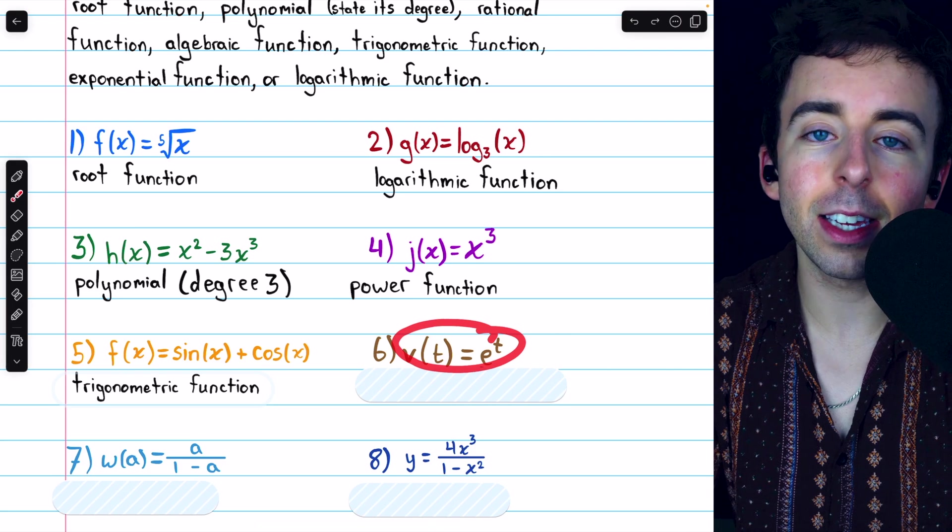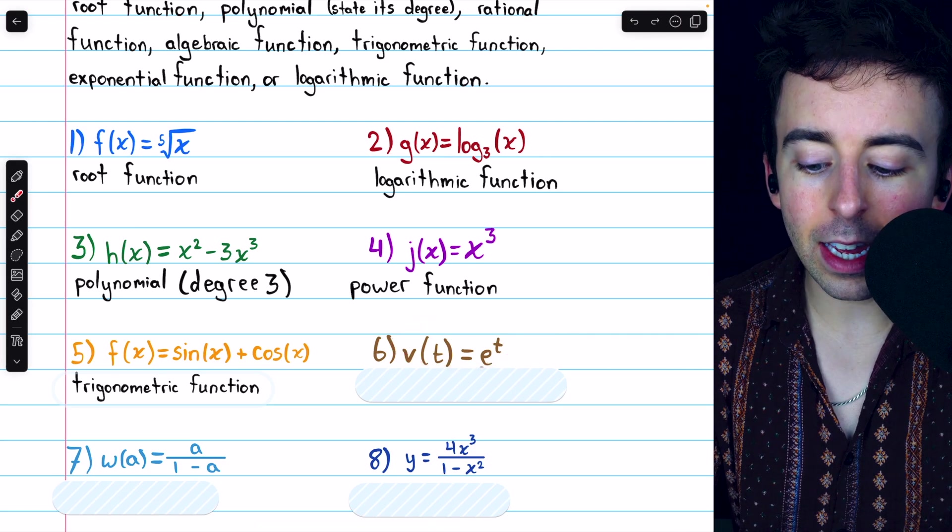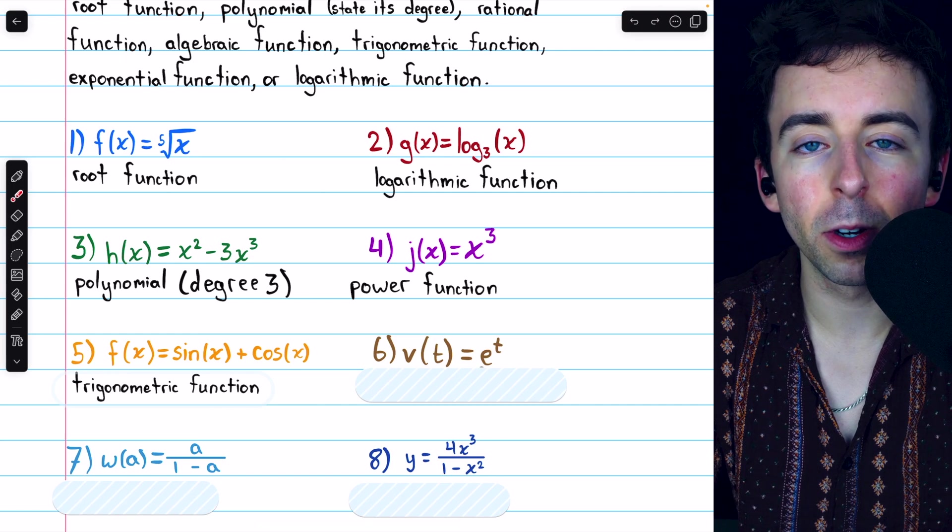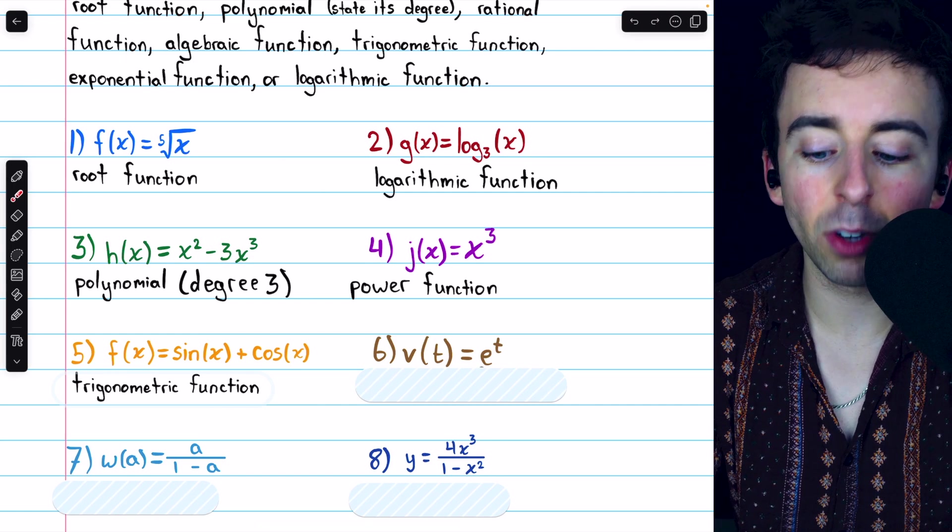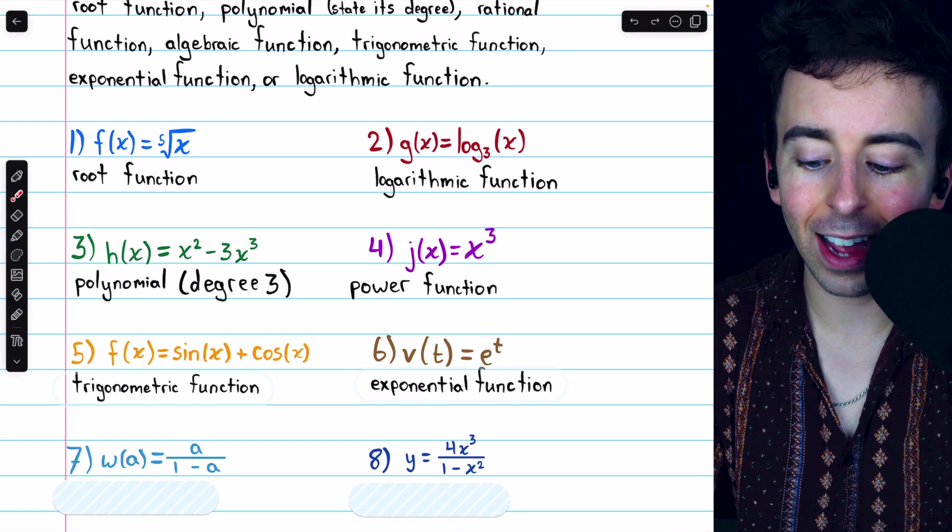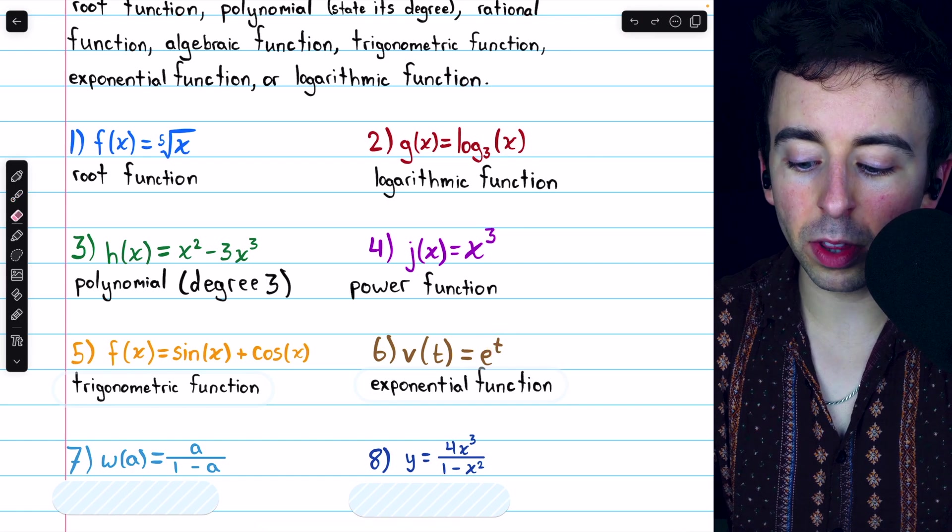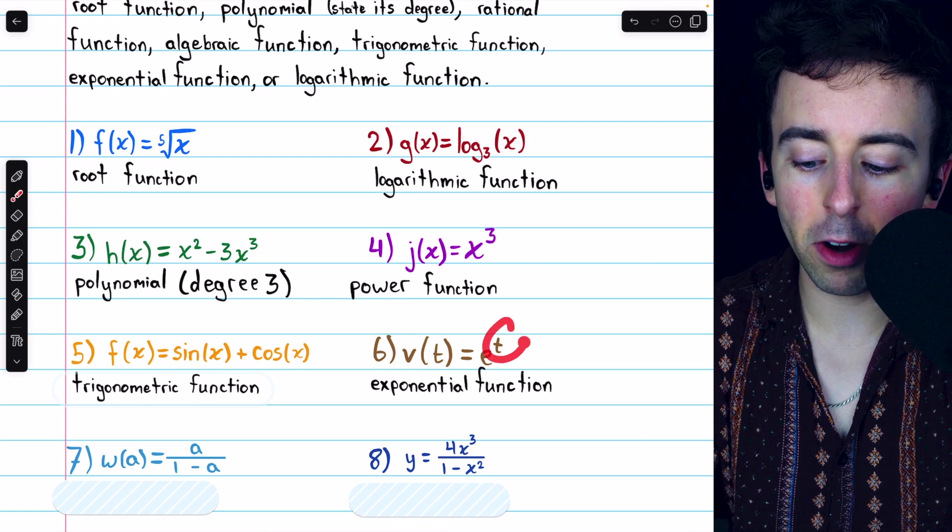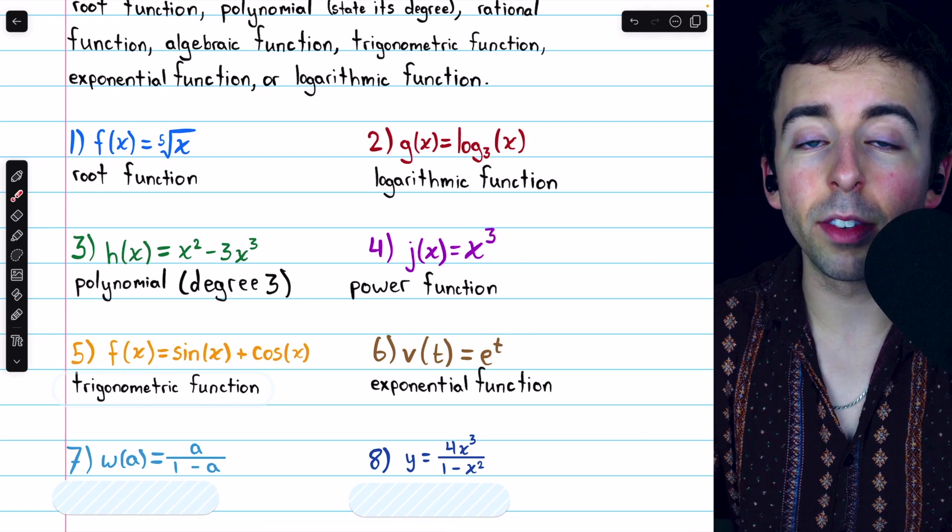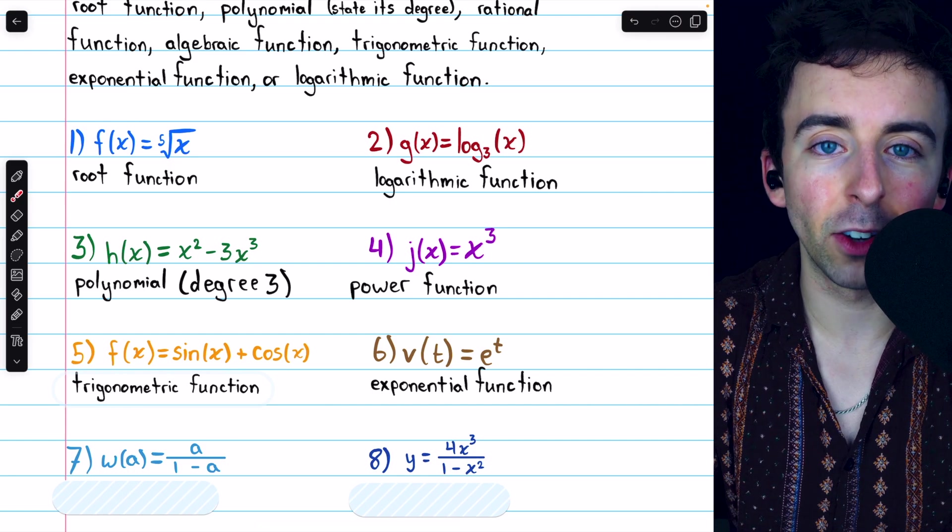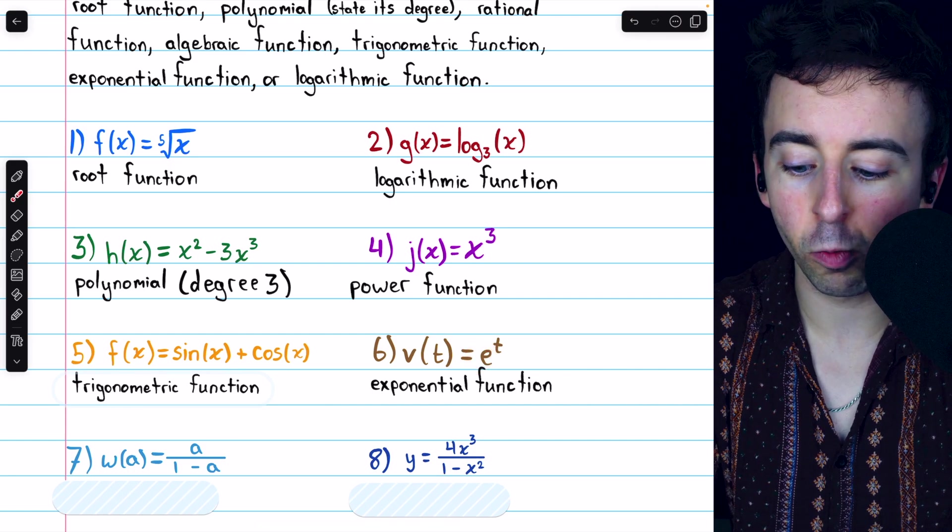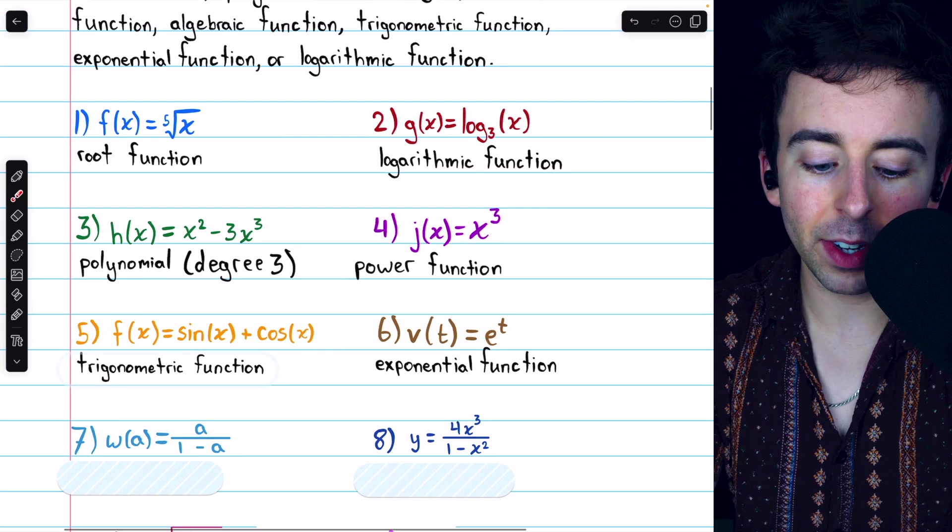Number six, v of t equals e to the t. E, you should recall, is just a number. It's an irrational number, but a number nonetheless. So in this case, we have a number to a variable power. That is an exponential function. Don't confuse it with the polynomial. In this case, the variable is in the exponent, so it's an exponential function. This one's often called the exponential function, specifically because it's that number e raised to the power of t.